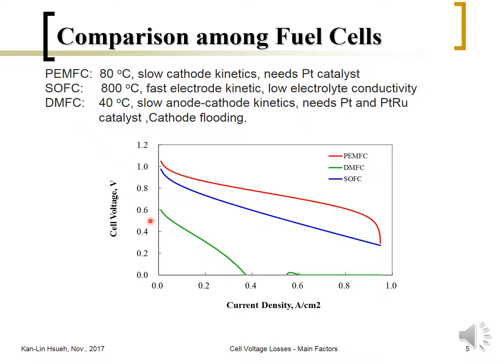That is why the DMFC has much lower power density and current output compared to other fuel cells due to these problems. However, because methanol is easy to store and portable, a large number of portable fuel cell developments still use the direct methanol fuel cell.